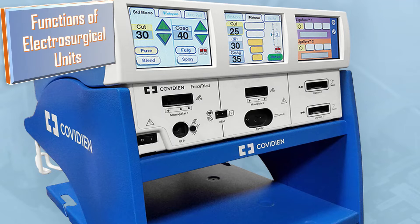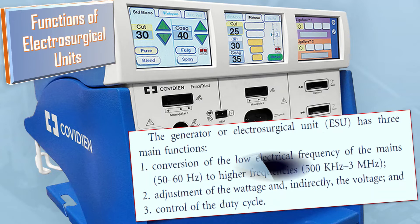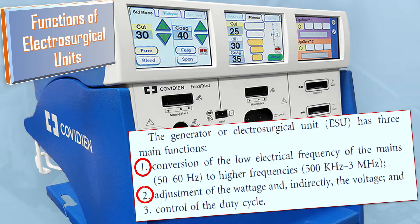The functions of electrosurgical units are also covered. There are three main functions of the generator or electrosurgical unit: first, the conversion of low electrical frequency of mains (50–60 Hz) to a higher frequency; second, adjustment of wattage and indirectly the voltage; and third, control of the duty cycle.